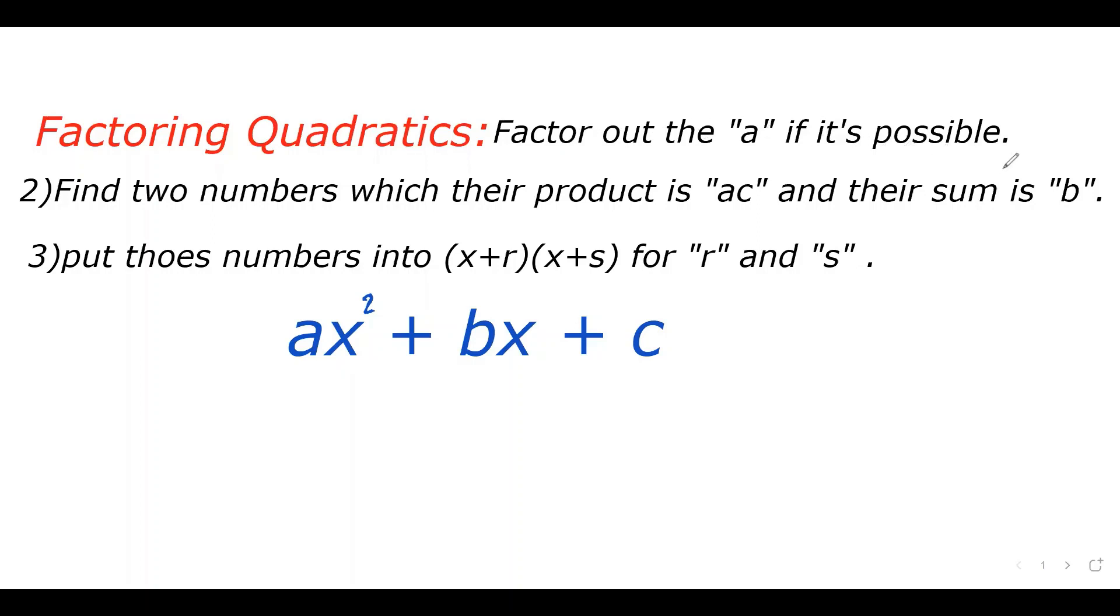And then we need to find two numbers which their product is ac, and their sum is the b value. And once we find those two numbers, we put it into this form, x plus r, x plus s. We plug in those two numbers for r and s.